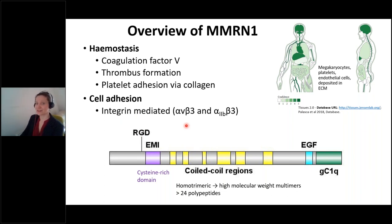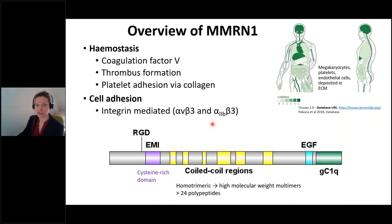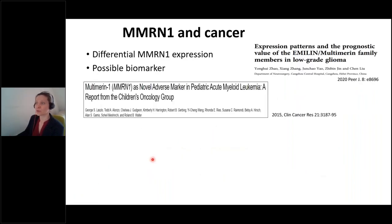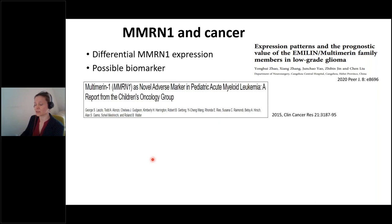We looked at the protein structure of multimerin-1 — it is a large protein with the EMI domain, coiled-coil regions, an EGF domain, and a globular C1Q domain. Despite what is known about multimerin-1 in platelets, none of these domains has been assigned a role in the mechanism. The only known thing is that the RGD motif is required for cell adhesion via integrin. We were set up to study the interaction of EFB constructs with multimerin-1 constructs — but then COVID happened and we could not do any lab work.